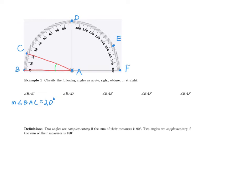This brings us to the first classification. Anytime you have an angle between 0 and 90 degrees, we refer to that as acute. The term acute is synonymous with severe or sharp. When you have an angle drawn within this region, it comes to a sharp or severe point — that's the reason for this terminology.